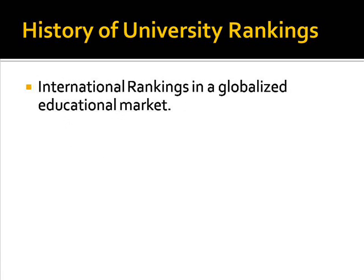The next major development was the devising of international rankings. These originated in both China and Britain in the early 2000s, and the idea of an international ranking table of universities has proven to be enormously popular and influential. It was probably inevitable that in an increasingly globalized world, both individual universities and national governments would become more conscious of international comparisons between institutions and national higher education systems. Moreover, as academic staff and students became more mobile, there was greater international competition for prestige and resources. Rankings came to provide a simple means by which to evaluate differences.